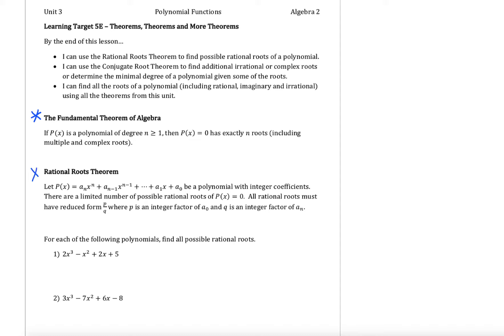Our next theorem is called the rational roots theorem. If I have p(x), a polynomial in standard form — a_n x^n + a_(n-1) x^(n-1), all the way down to a_1 x plus our constant term a_0 — with integer coefficients, then there is a limited number of possible rational roots. All rational roots must have the reduced form p over q, where p is an integer factor of our constant term a_0, and q is an integer factor of our leading coefficient a_n.